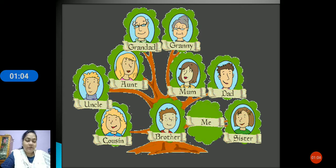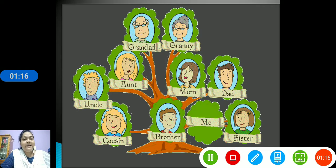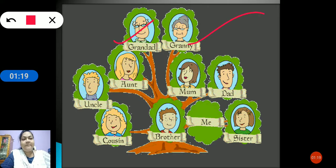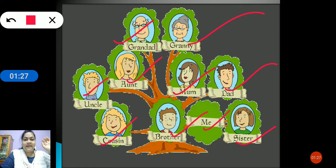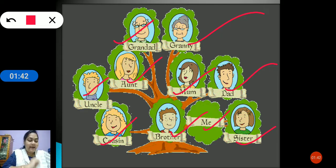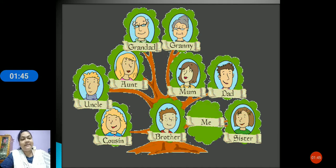So what is a family tree? A detailed chart of a family is called a family tree. Who are in the family tree? You have the grandpa, grandma, mother, father, sister, you, your brother, your uncle, aunt and your cousins. They are the members of your family.